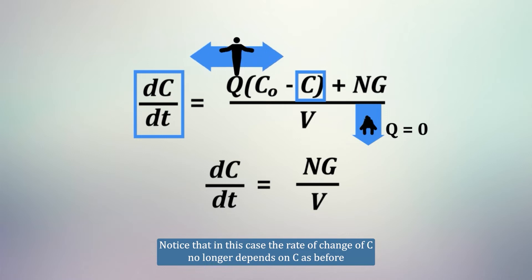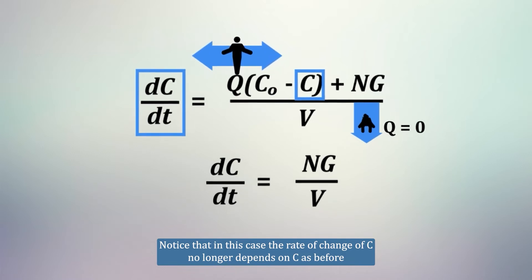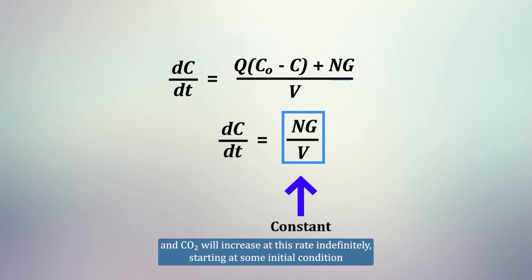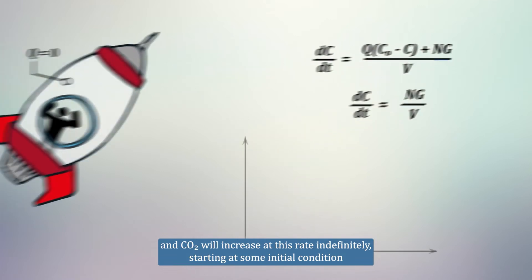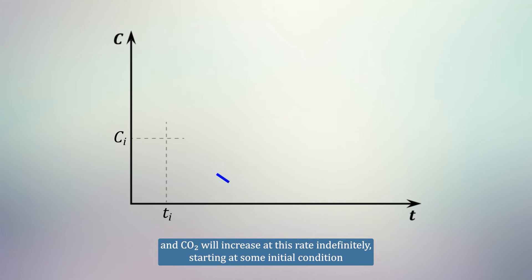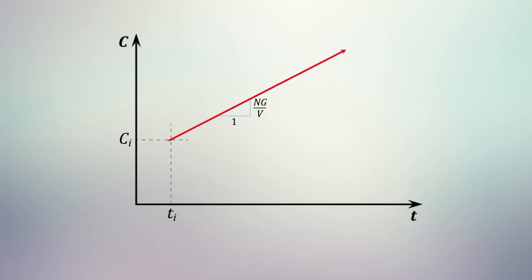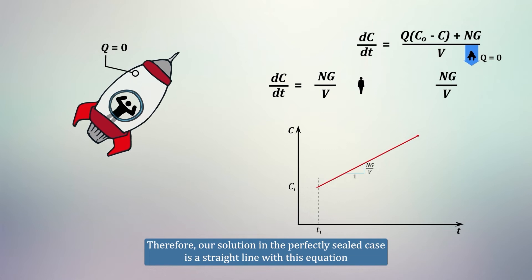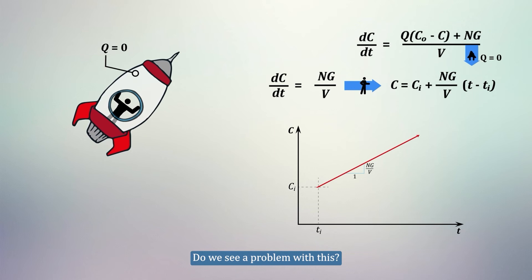Notice that in this case, the rate of change of C no longer depends on C as before. This tells us that the rate of change of CO2 is equal to a constant, and CO2 will increase at this rate indefinitely, starting at some initial condition. Therefore, our solution in the perfectly sealed case is a straight line with this equation. Do we see a problem with this? Can the CO2 concentration increase forever? What effect will this have on the astronauts' insides?